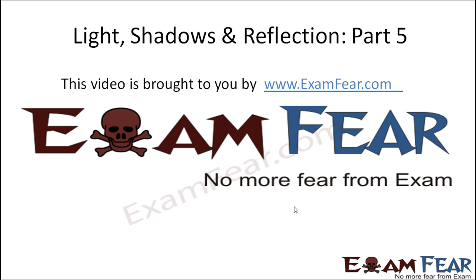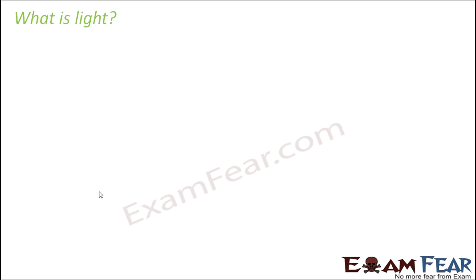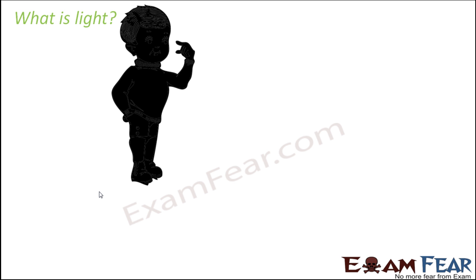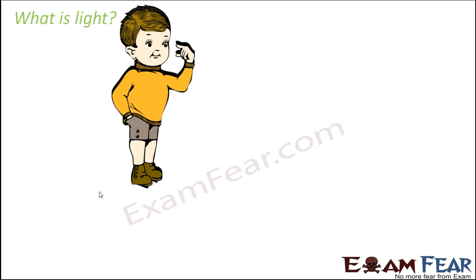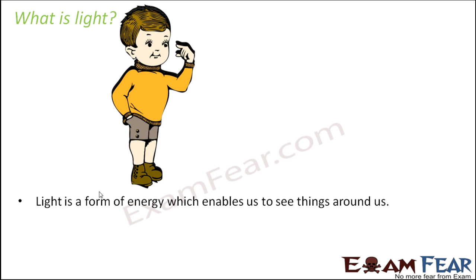This video on light, shadows, and reflection part 5 is brought to you by examfear.com. Now that we have a basic idea about how light interacts with various objects, let us see what exactly is light. Light is something that enables us to see — it is a form of energy which enables us to see things around us.